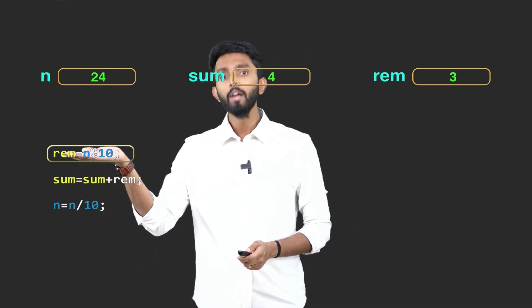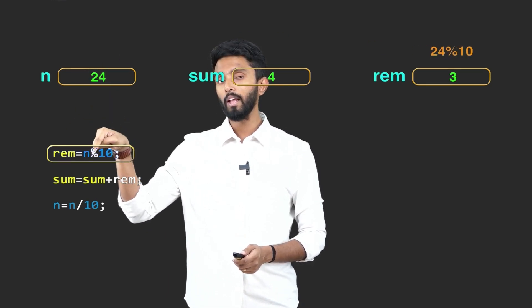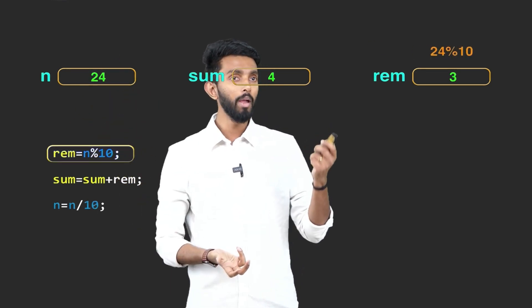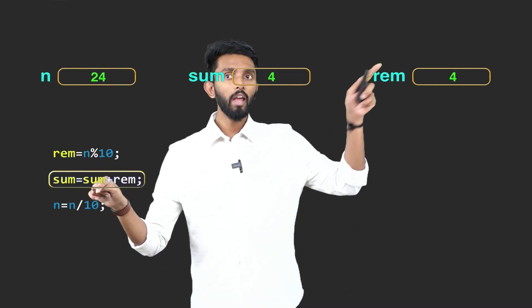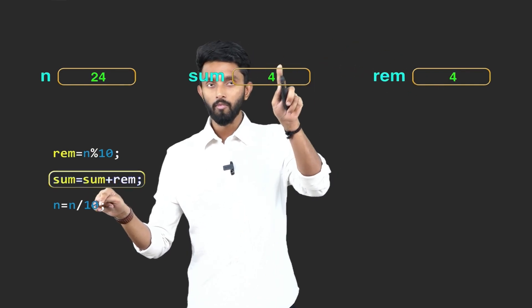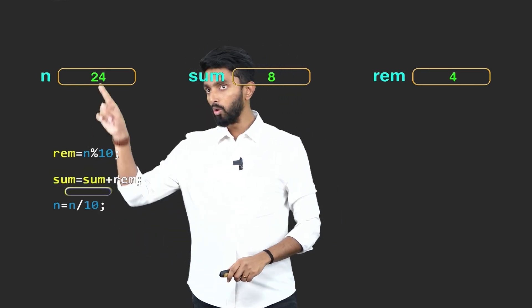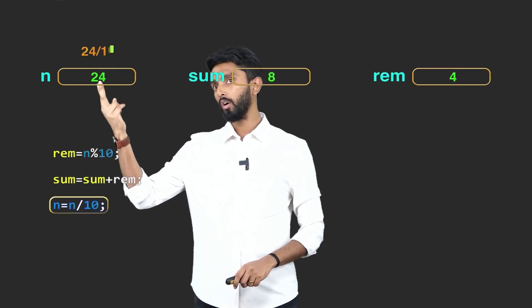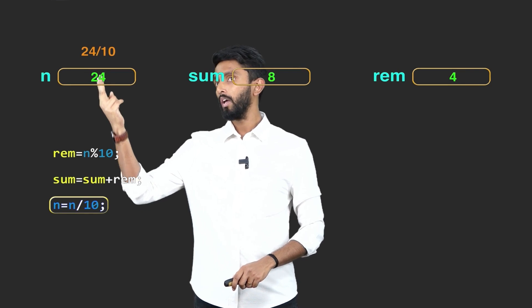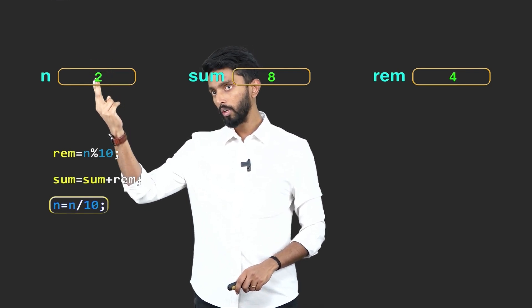Again, repeat this process. Take the new value of n, which is 24, and divide it by 10 — I want the remainder, which is 4. Remainder got updated. Take remainder, take sum value, add them together: 4 plus 4 is 8. Give it to sum — sum becomes 8. Next, remove 4 from the digit: take n, divide it by 10. So 24 divided by 10, the quotient is 2, and that is what I give to n. n is 2.